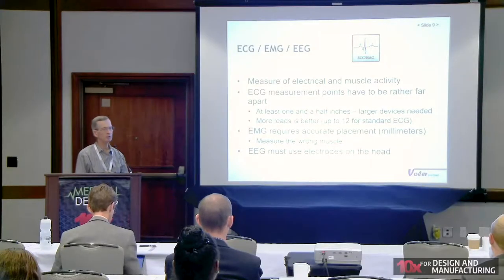EMG measures the same sort of electrical signal but on muscles. A very common place is on the forearm — you can detect individual muscles and determine which finger is moving from an EMG signal. However, there's a limitation: if you're off by a few millimeters you're on the wrong muscle and detecting the wrong finger. Positioning something accurately within one or two millimeters on the wrist is a real challenge. For EEG, measuring brain signals, the only place you can do it is on the head — forehead, temples — and there are helmets that do these measurements.